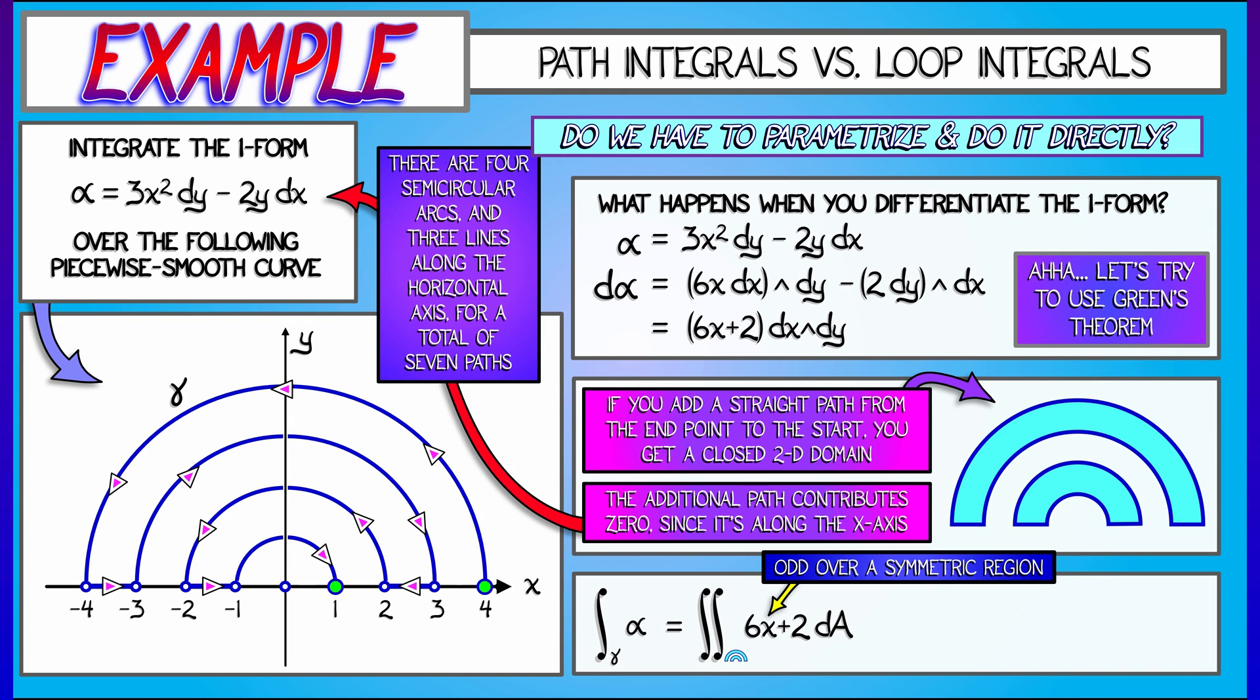Now, notice that 6x is odd in x, and I'm integrating over a symmetric domain in x. It's symmetric, flipping about the y-axis. That means I can eliminate that term in the integral. I'm left with the double integral of 2 dA.